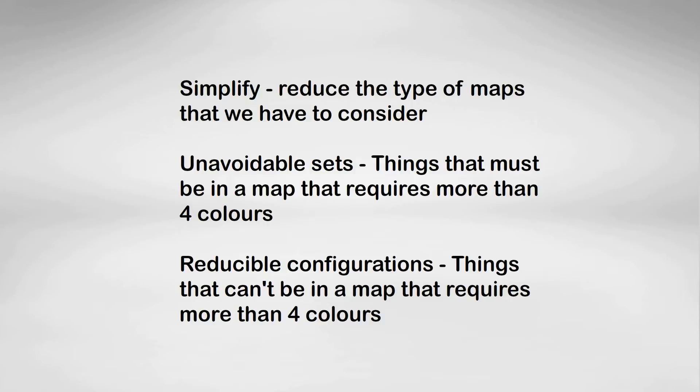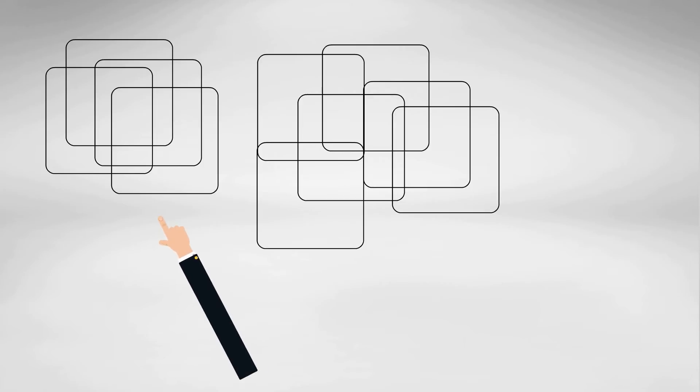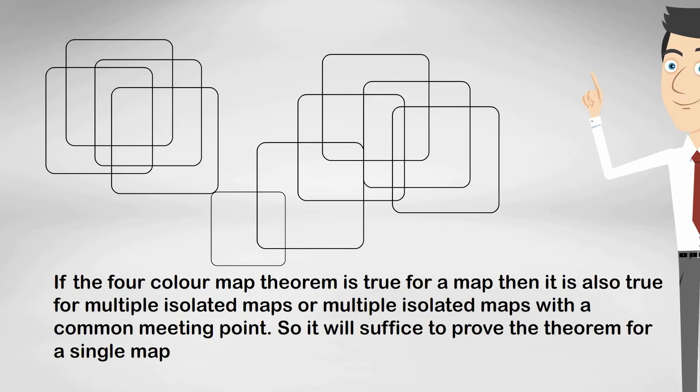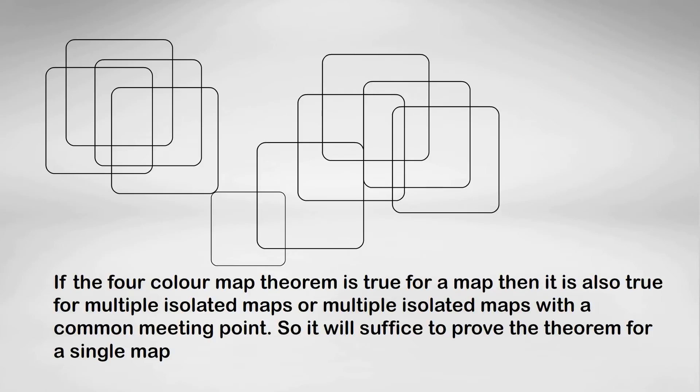Here are two isolated maps. If the Four Colour Map Theorem is true for just a single map, then it's also true for multiple isolated maps. The theorem tells me I can colour the left map with four colours and the right map with four colours, and then I'm done — I've coloured multiple maps. So I don't really need to worry about multiple maps. If I can just prove the Four Colour Map Theorem for a single map, then the argument will hold for multiple maps, and it will also hold for multiple maps that are joined at a single point.